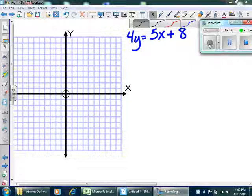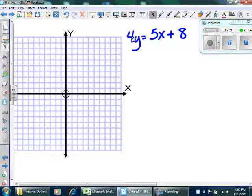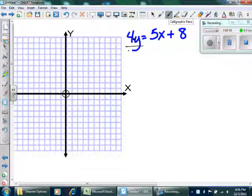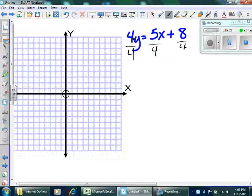Remember, my goal is to get the y alone. Right now, the 4 is the only thing keeping the y from being alone. It's attached by multiplication. I will undo the multiplication by dividing by 4. I have to do it in all three places. It's distribution.